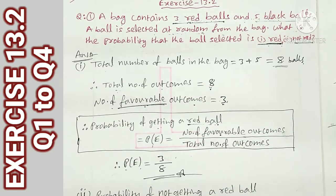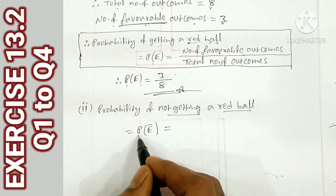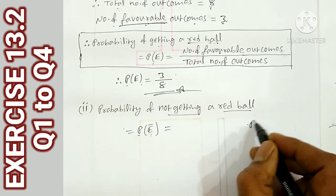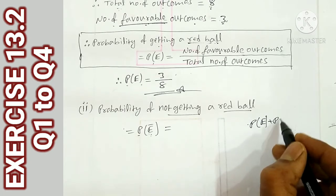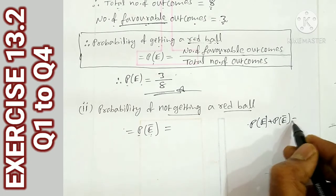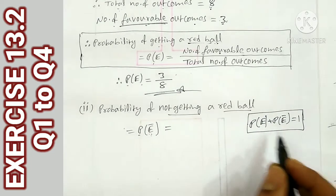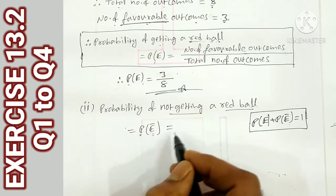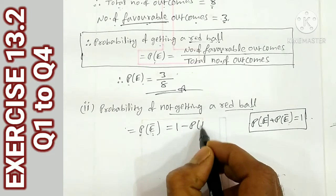So the answer for P(red) is 3/8. After that, for not getting a red ball, we use the formula: P(E) + P(E bar) = 1. So P(E bar) = 1 minus P(E).